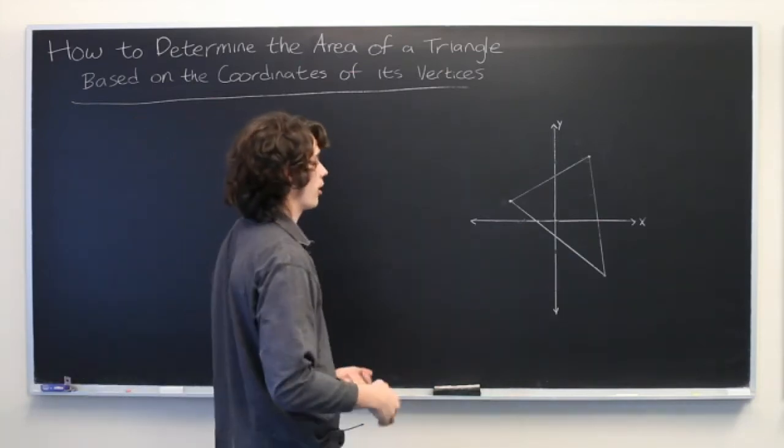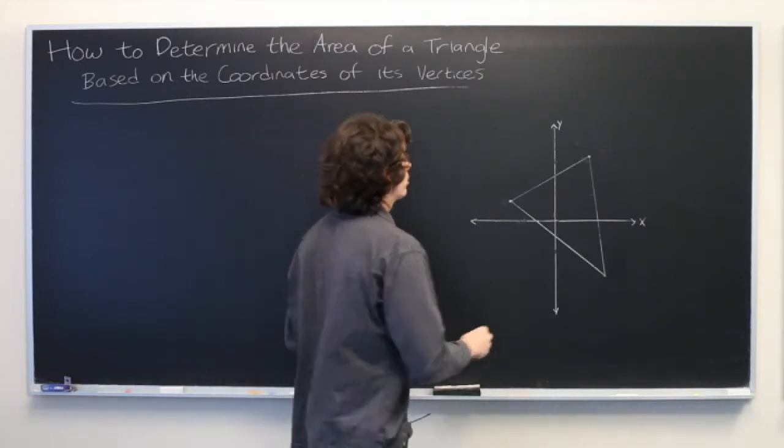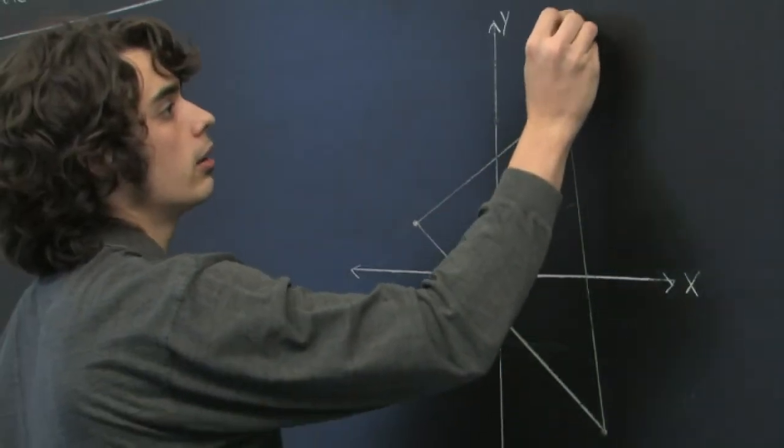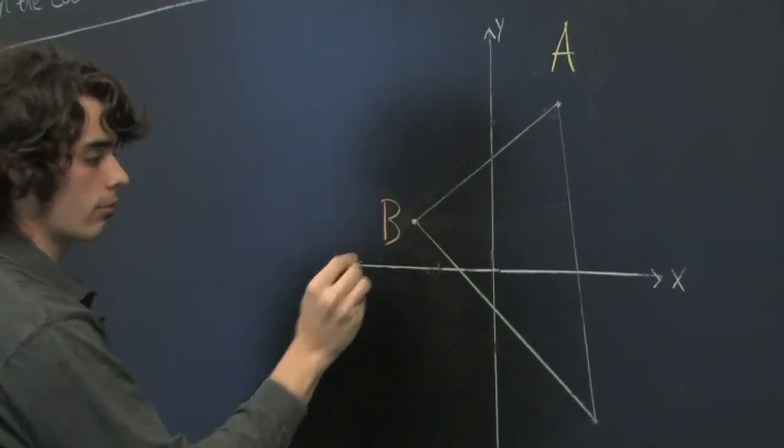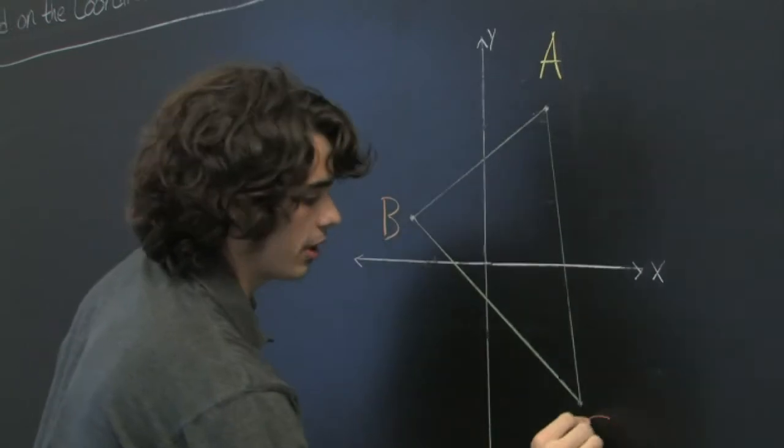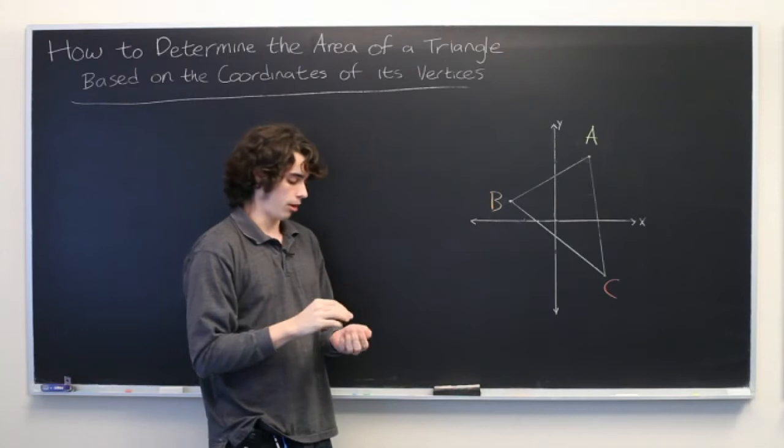So here we have some arbitrary triangle, and we're going to go ahead and label its vertices. We'll call this one A, we'll call this one B, and this one C. It doesn't matter how you label them as long as it's consistent throughout the entire problem.